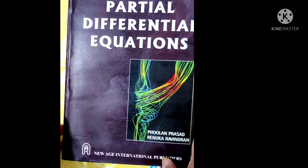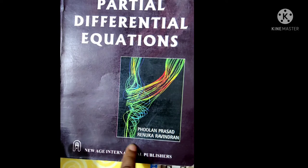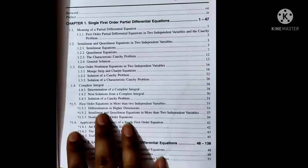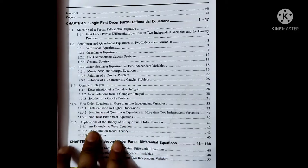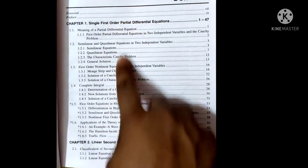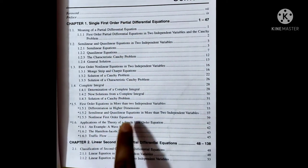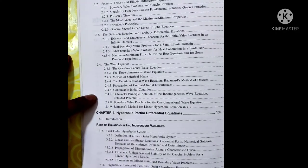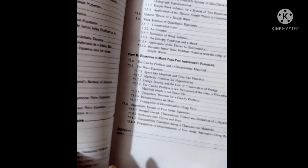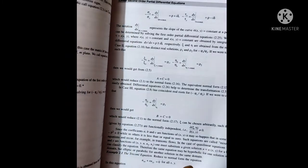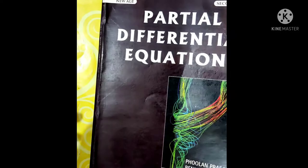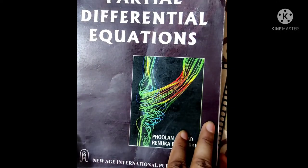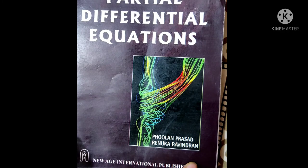The next book is 'Partial Differential Equations' by Phoolan Prasad and Renuka Ravindran, published by New Age International. Pages 1 to 47 cover first order equations in detail, and second order equations are discussed in the following portion, with hyperbolic equations especially emphasized. The discussions in this book are really great.